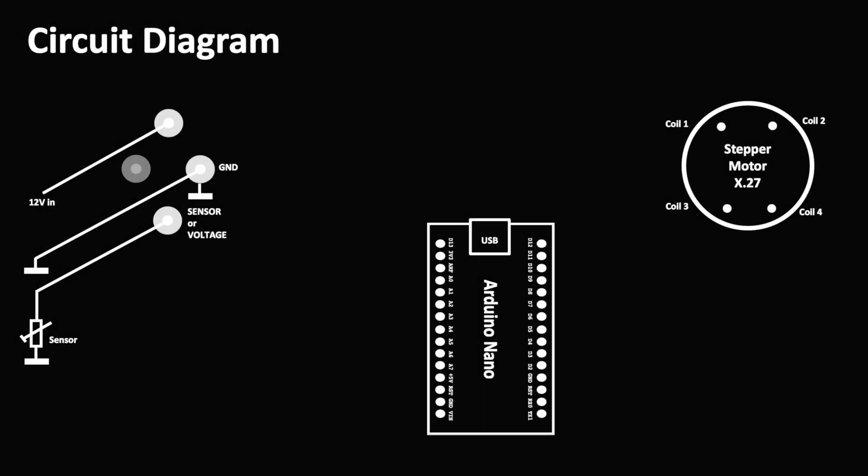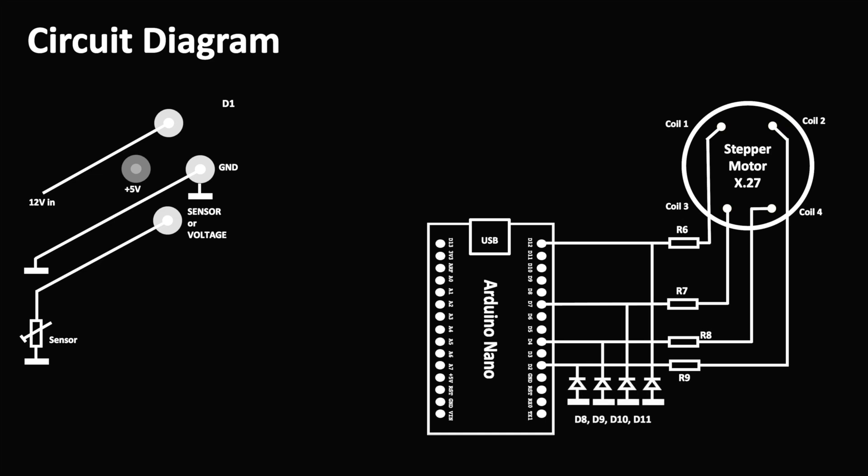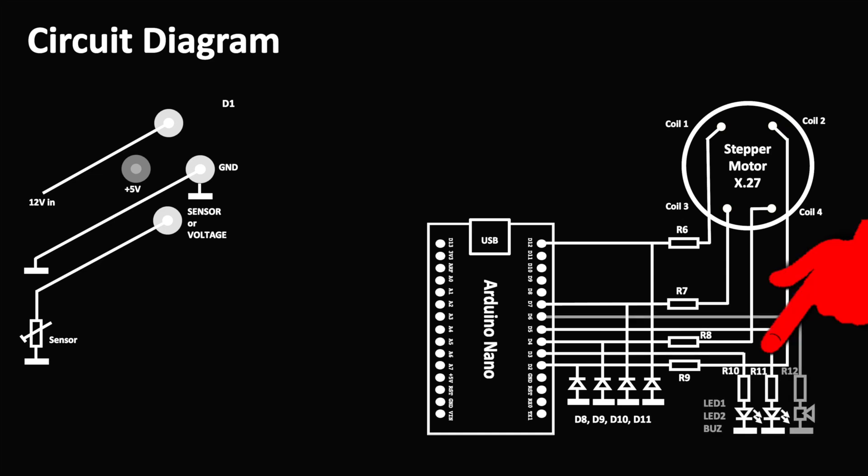The stepper motor's currents are limited by serial resistors and four flyback diodes are protecting the processor outputs from voltage peaks occurring at the stepper coils. Further outputs are controlling two LEDs and a buzzer.